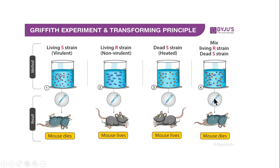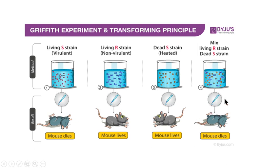One experiment that was unexpected was when he mixed the living R strain — which was non-virulent — and the heat-killed S strain, which was virulent. Individually, neither the living R strain nor the dead S strain was killing the mouse. But when he mixed them and injected that into the mouse, the mouse died. This was a very unusual result.